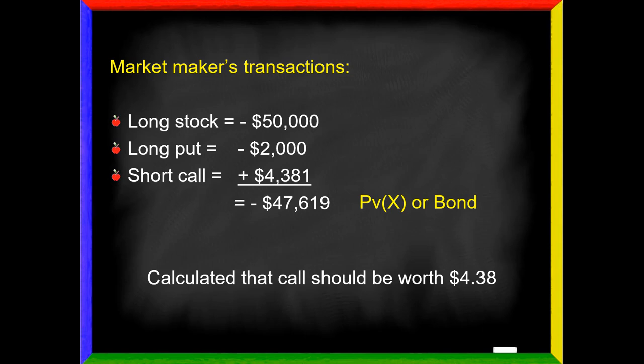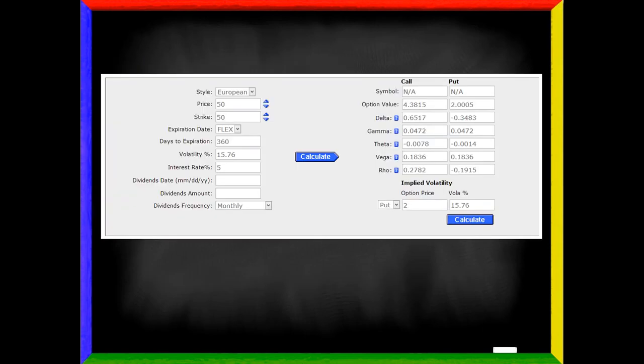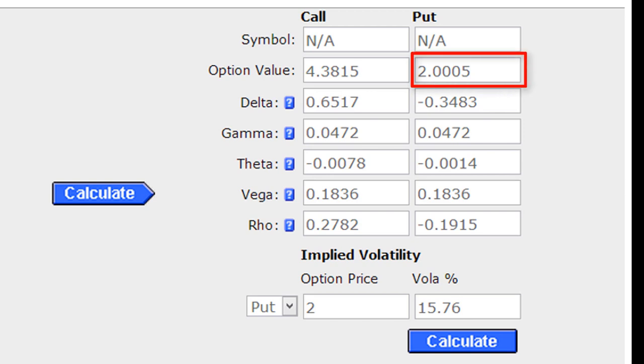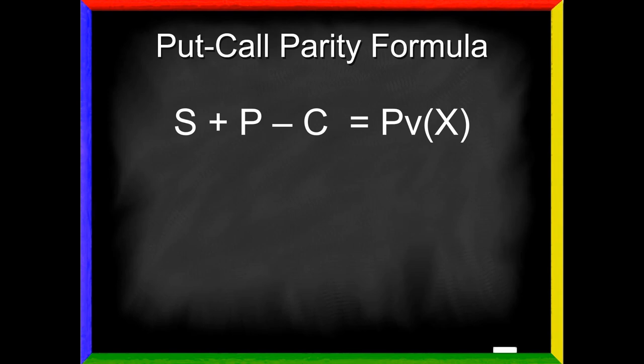We've calculated that this call should be worth $4.38. It's a very roundabout way of doing it. But what would the Black-Scholes pricing model say about this same situation? We've got stock and strike at $50, 360 days to expiration, 5% interest rates, and I've chosen this odd-sounding volatility number of 15.76. I did that because that is the volatility necessary to make the put's price exactly $2. But notice what it's telling me the call option is worth: $4.38, exactly what we figured out. So the put-call parity formula simply says long stock plus long put plus a short call equals the present value of the exercise price. Or more simply, we might just call it a T-bill. If you know this formula, you can figure out all of your synthetics.